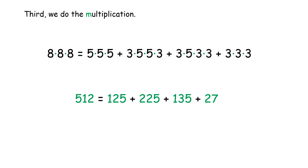Third, we do the multiplication. Eight times eight times eight is five hundred twelve. Five times five times five is one hundred twenty-five. Three times five squared times three is two hundred twenty-five. Three times five times three squared is one hundred thirty-five. Three times three times three is twenty-seven.